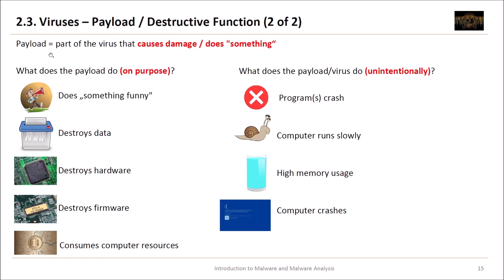What does the payload do on purpose, and what does it do unintentionally? The very first viruses did something funny — a pop-up with funny text or playing music — but this is only an exception. Most viruses destroy data, destroy hardware, destroy firmware, and consume computer resources; an example of resource consumption is Bitcoin mining. Unintentionally, a program could crash, the computer runs slowly because the virus consumes all resources, there is high memory usage, or the computer could also crash.